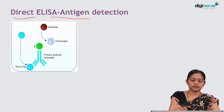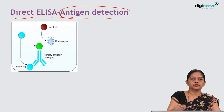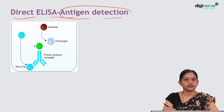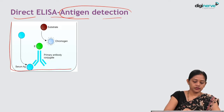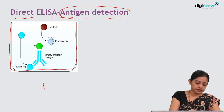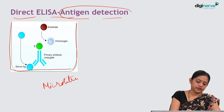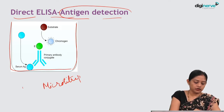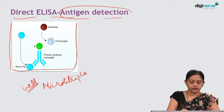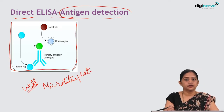Direct ELISA is the ELISA which is performed for antigen detection. This is a single microtiter well of an ELISA plate — the ELISA plate is made up of 96 wells. Now we will see step by step what reactions occur in a direct ELISA.